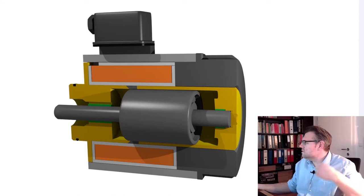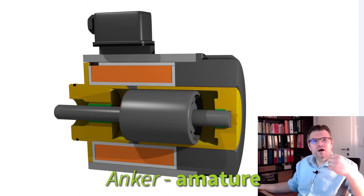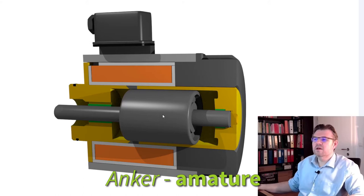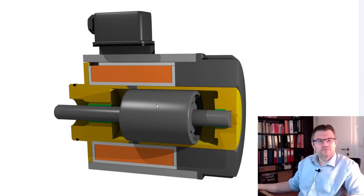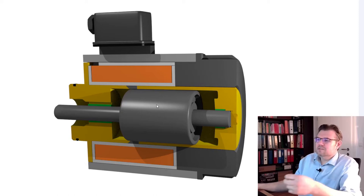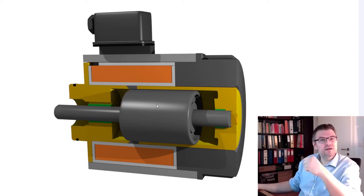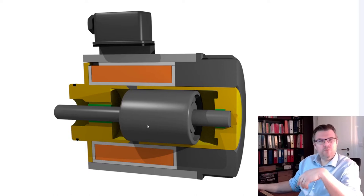So, this here is the moving part. It's simply called armature. Anker in German. Armature. So, this is moving. This is soft iron. Well, soft iron, you know, it's not soft. It's not cozy iron. It's magnetically soft. So, it's easy to magnetize.